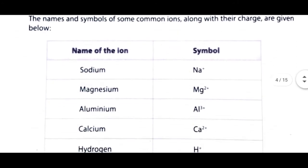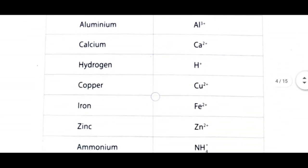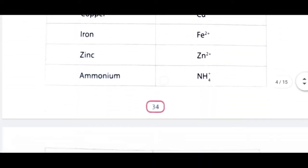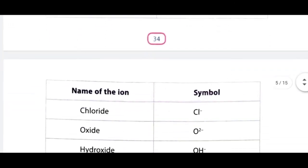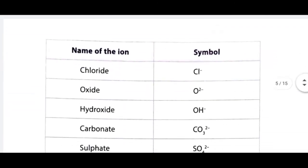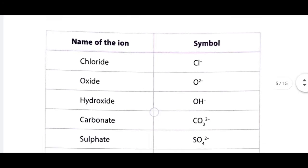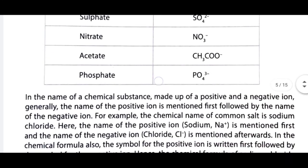Now let us see the charges. Sodium is Na⁺, magnesium is Mg²⁺ — plus ka matlab hoota hai ki ye positive ions hain. Here are the negatively charged ions: chloride is Cl⁻, oxide is O²⁻. These are negatively charged ions. Aapko inhe bhi yaad kar lena hai.